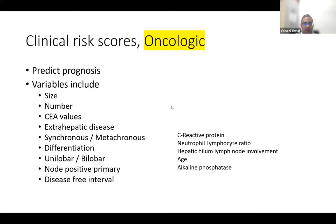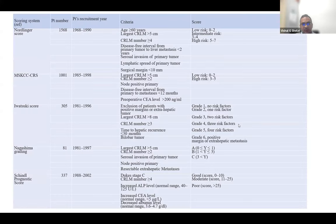Additional less commonly reported but established prognosticators include bilobar positivity and others. The following slides summarize existing prognostic risk scoring systems — presented for awareness. The two more common and earlier ones are Nordlinger and Fong scoring systems, which give an idea of five-year survival outcomes across various prognostic markers including age, T4 disease, lymph node status, size over five centimeters, and number of metastases.